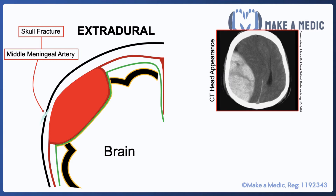When a CT scan is performed for patients with a suspected intracranial hemorrhage, an extradural will give rise to this convex appearance. Furthermore, as it presents acutely, the blood is likely to appear hyperdense — in other words, it appears light.